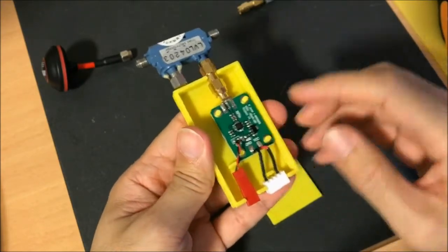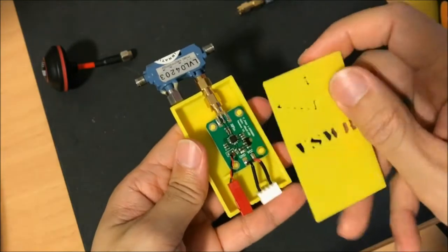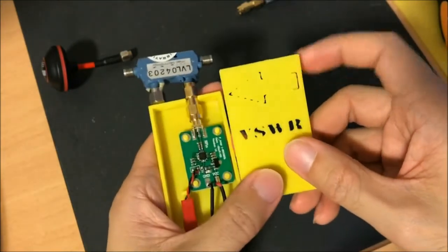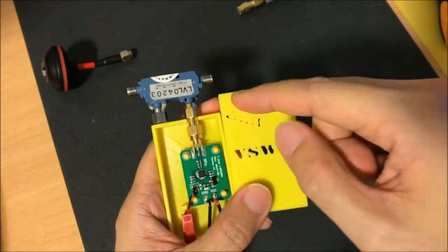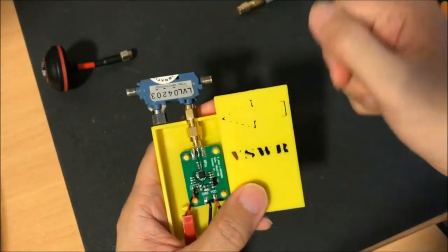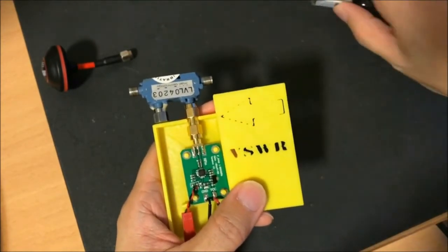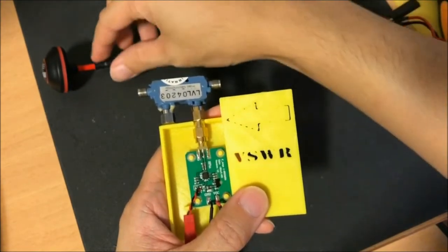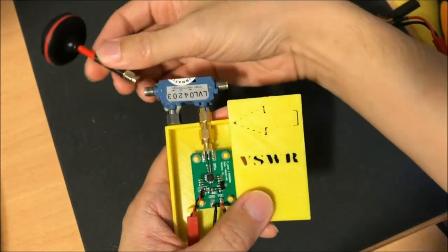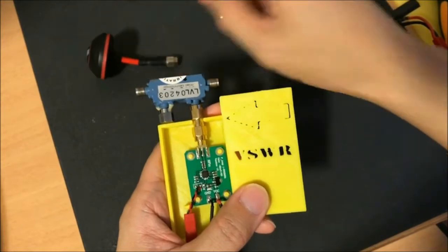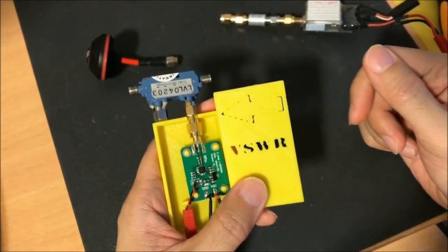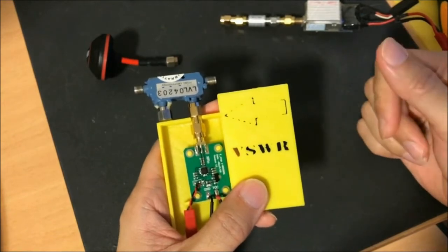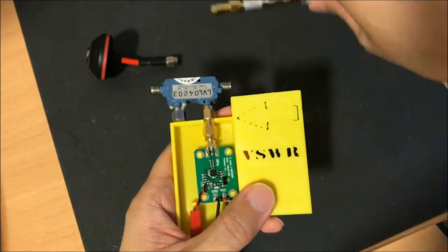And this is the coupler. Notice the arrow pointing to the left. That's the direction of the coupler. So basically you want the transmitter to be here, and the antenna which you like to measure to be here for the forward power. Then to get the reverse power, just put it the other way around.